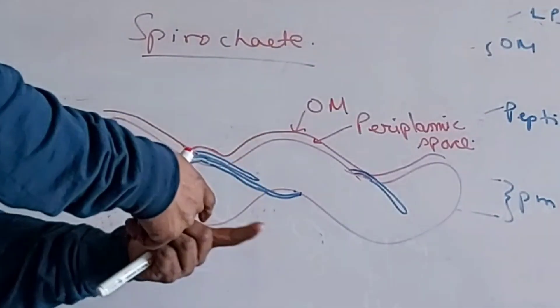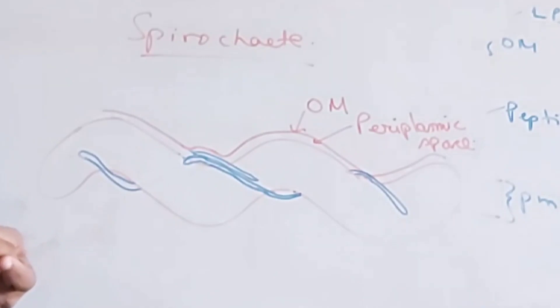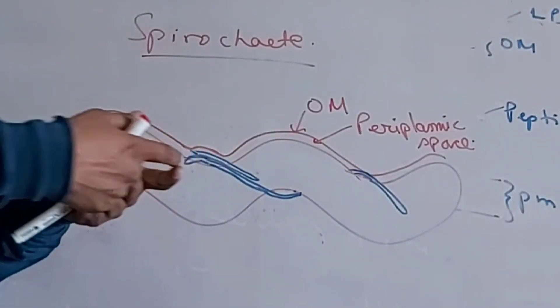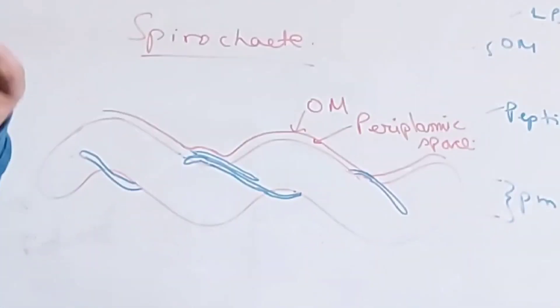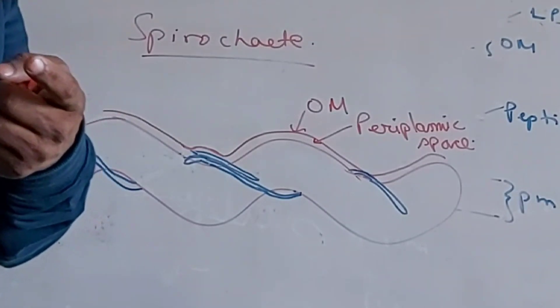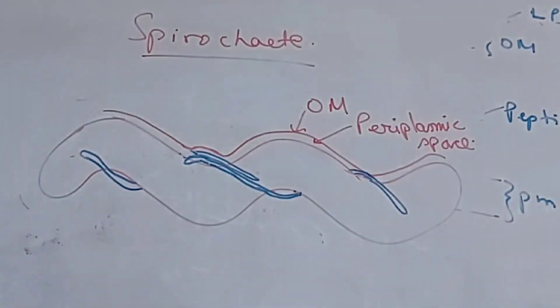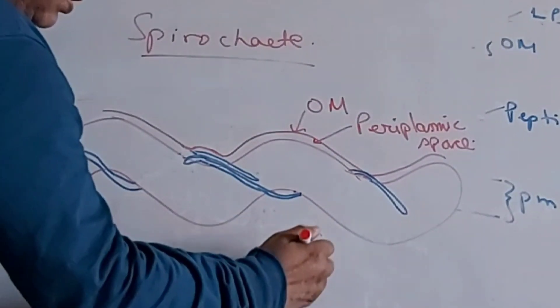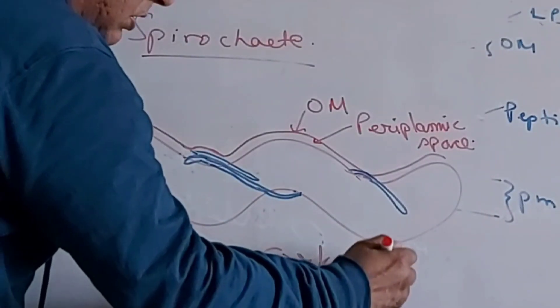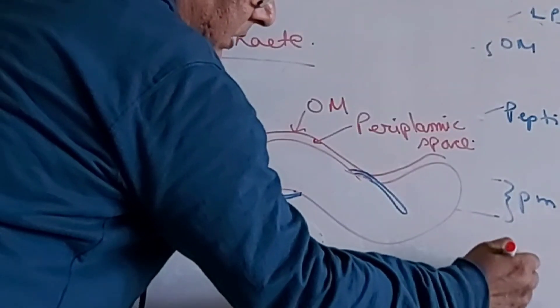So because of the sliding movement of this endoflagella, periplasmic flagella, the spirochete, which is the spiral structure, it shows a corkscrew-like movement. The movement is like what is called corkscrew movement.